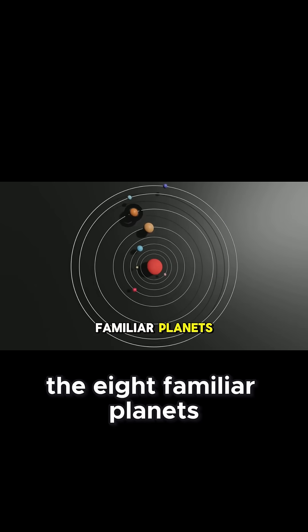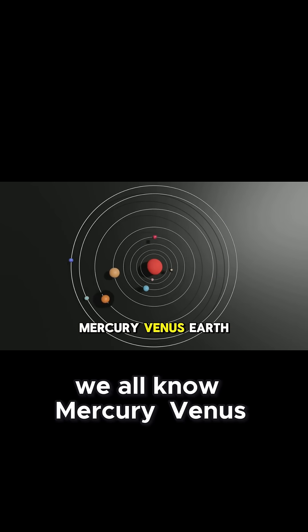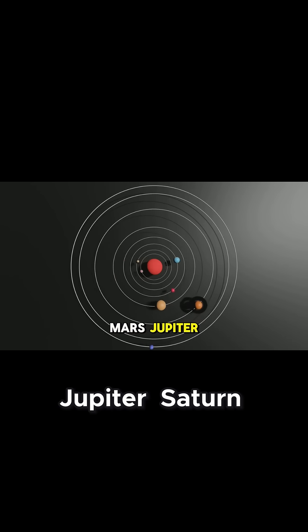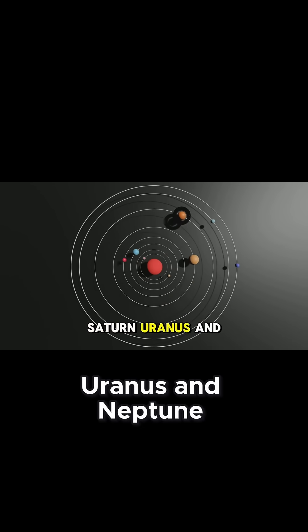The story begins with the eight familiar planets we all know: Mercury, Venus, Earth, Mars, Jupiter, Saturn, Uranus, and Neptune.